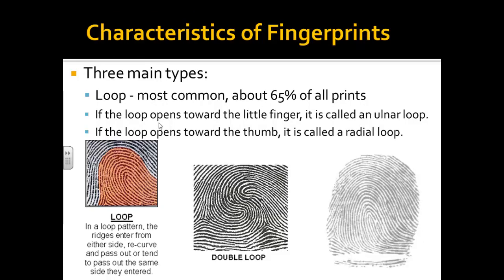Let's look at the three main types of prints. The first and most common is the loop — roughly 60 to 65% of all prints will have some sort of loop. If that loop opens towards the little finger, it's called an ulnar loop, relating to the ulnar bone in your arm. If it goes toward your thumb, it's called a radial loop, relating to the radius in your arm.